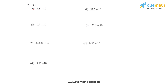In the first bit we have 4.8 divided by 10. So the decimal will move one place towards the right, and the answer for the first bit becomes 0.48 after division.